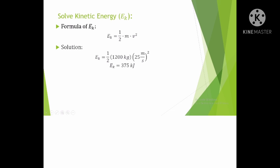After solving force, you need to solve the kinetic energy. The formula of kinetic energy is E sub K equals one-half times m times v squared. The solution to the kinetic energy is one-half times the mass 1200 kilograms times 25 meters per second squared. So the kinetic energy equals 375 kilojoules.